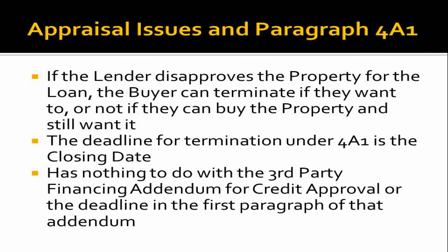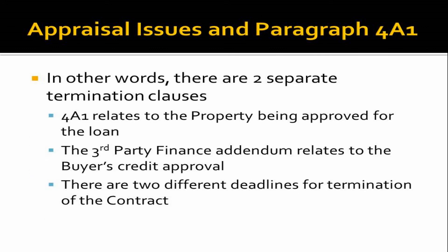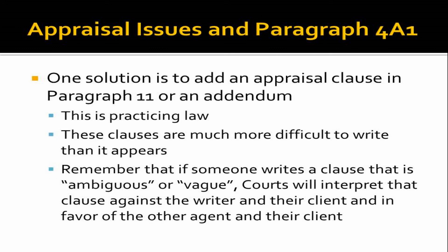The deadline for terminating under 4A1 — assuming the lender disapproves the property — is the closing date, so the buyer has the right to terminate all the way up to closing. That's true even if the deadline in the third-party finance addendum has already passed — they're completely separate. We have two separate termination clauses: paragraph 4A1 relates to the property being approved for the loan, and the third-party finance addendum relates to the borrower's credit approval and financial ability. These are two totally separate deadlines, but both relate to the lender, loan, and borrower.